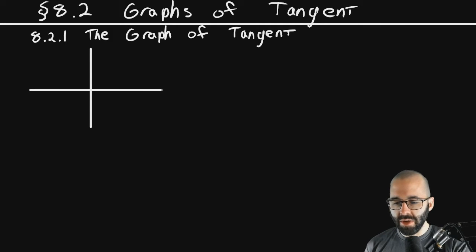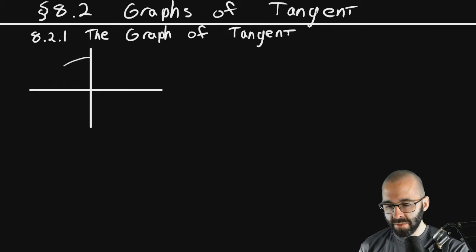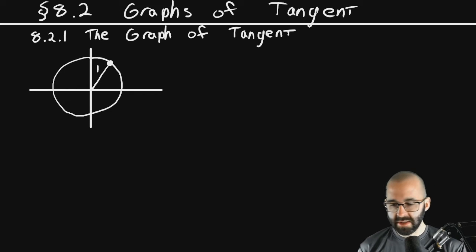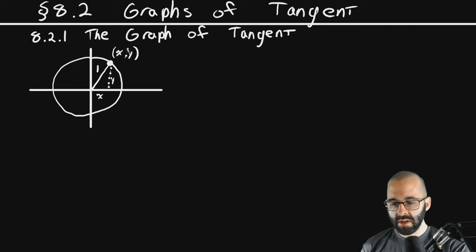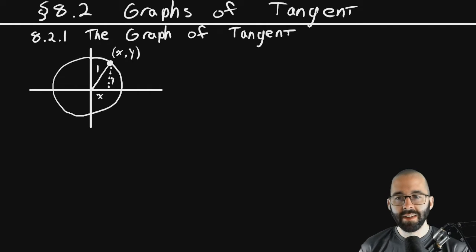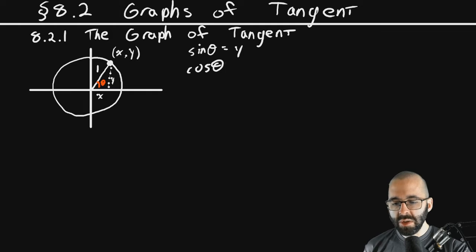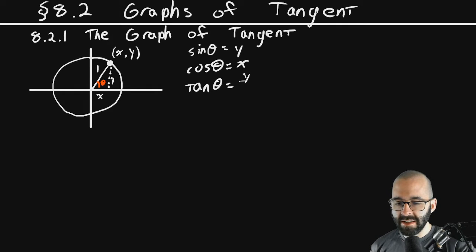Let's start by reminding you about the unit circle. The unit circle has a radius of one, it's centered at the origin, and we can think about a point (x, y) on it. Since the hypotenuse is one, the sine of angle theta is opposite over hypotenuse, which is just y. The cosine is the x coordinate, and the tangent of that angle is sine divided by cosine.